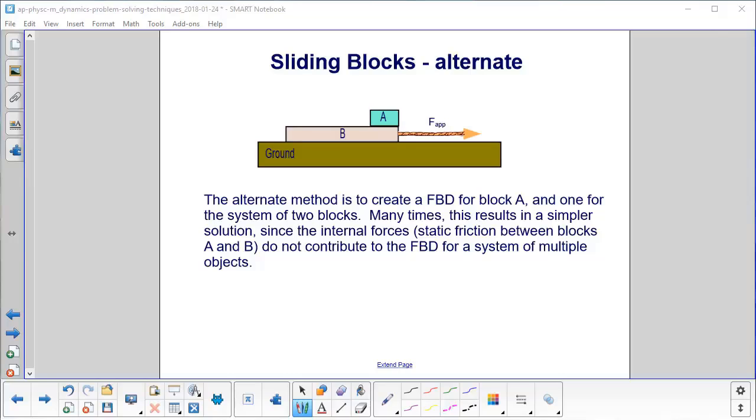Many slides ago, we promised an alternate method to solve this problem. That method involves creating a free body diagram for block A, but then instead of a free body diagram for block B, we will create one for the system of A and B. Many times this results in a simpler solution since the internal forces, the static friction between blocks A and B, will not be part of the free body diagram for the system here. It's an internal force, so it's not counted.